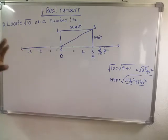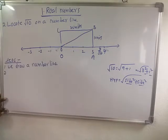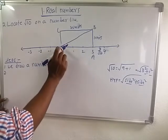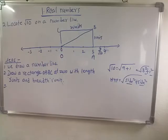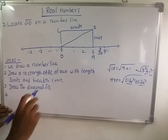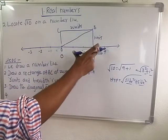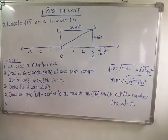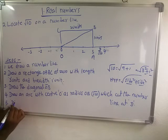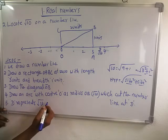So the steps are: draw a number line; draw a rectangle OABC with length three units and breadth one unit; draw diagonal OB; draw an arc with center O and radius OB which intersects at D on the number line. Here D represents square root ten on the number line.